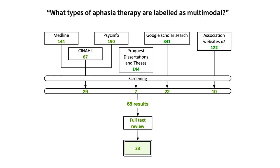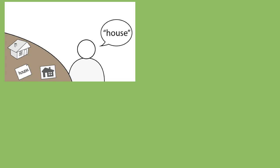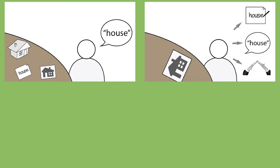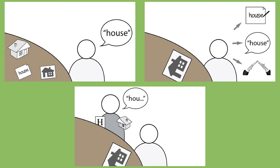In this paper, we conducted a scoping review to answer the question: what types of aphasia therapy are labeled as multimodal? We used systematic search methods and included grey literature, and our search resulted in 33 original research items. The results showed that the term represents very different therapies with not a lot of consistency. For example, some used alternative modalities as stimuli for participants to respond to, some had participants producing multiple modalities in response to stimuli, and others used multimodal cues, and many used a combination of these.